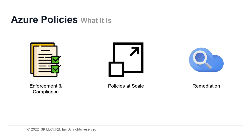An Initiative is a collection of policies grouped together. An Initiative simplifies managing and assigning policies by grouping them as one single item. Azure Policy is comprised of three components: enforcement and compliance, application at scale, and remediation.